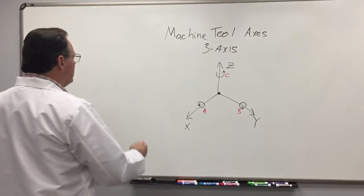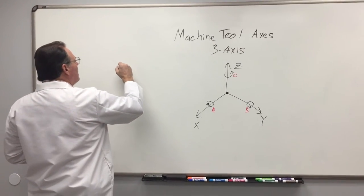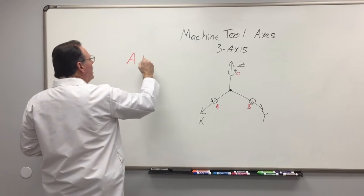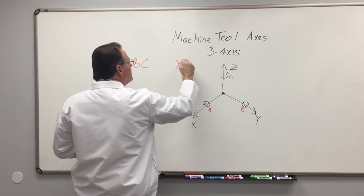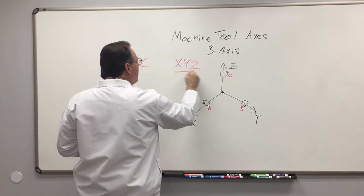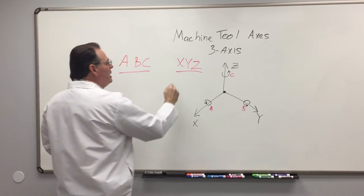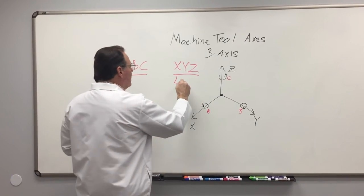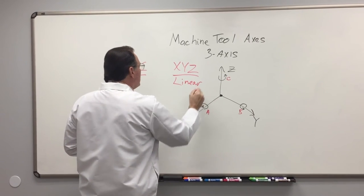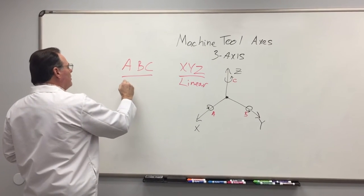And you'll find out that in your alphabet we have our a, b, c and x, y, z. All linear axes around the latter part of the alphabet, and all rotary axes around the beginning part of the alphabet.